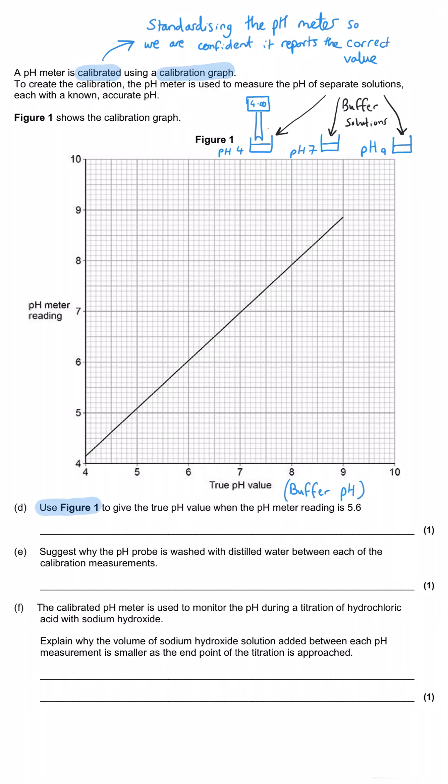In part D, we've been asked to use figure one to give the true pH, that's the x-axis value, when the pH meter reading, the y-axis value, is 5.6. So we need to read up the y-axis, find 5.6, so that's just here, then we construct a line along to here, and then we read down to the x-axis, and we get 5.5. You'd typically be allowed to be half a square out. You'd probably be allowed 5.5 or 5.6.